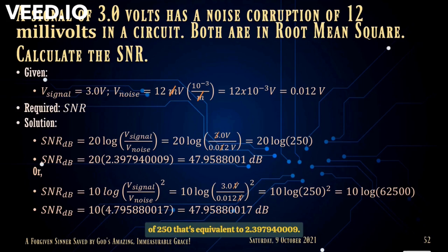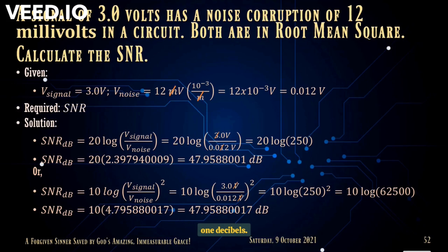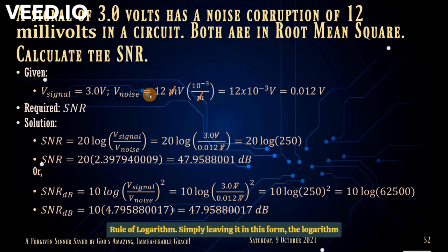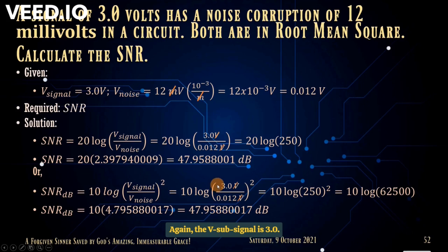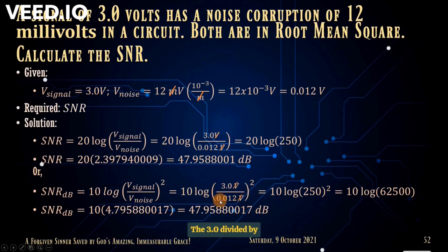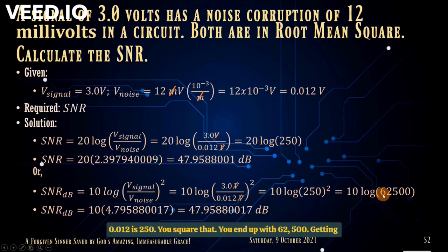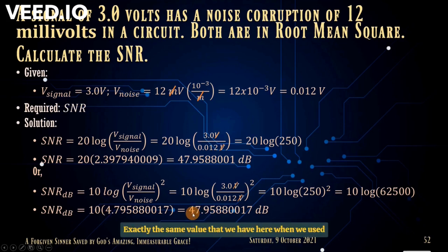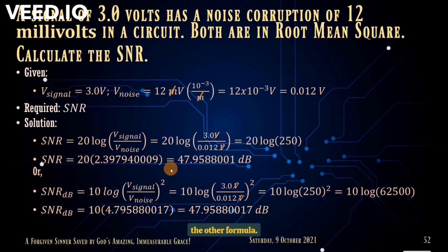log(250) = 2.39794009. Multiplying by 20 gives 47.9588 dB. We can verify using the alternative formula: SNR (dB) = 10 × log((V_signal/V_noise)²) = 10 × log(250²) = 10 × log(62,500) = 10 × 4.79588 = 47.9588 dB — exactly the same value.